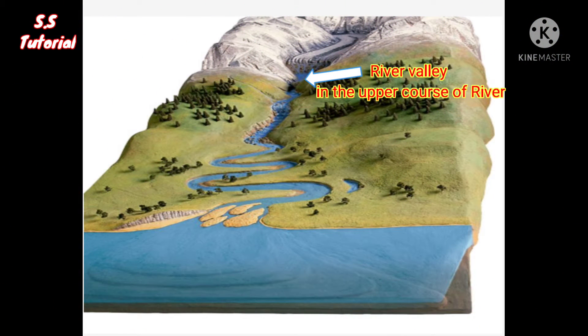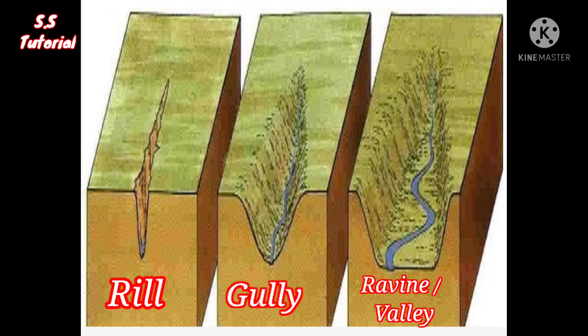River valleys are mainly formed in the upper course of a river. River valley starts as small and narrow rills. Over time, rills gradually change into long, deep and wide gullies, and when gullies become more deeper and wider, then it is known as a river valley.